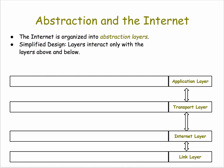An important concept is that layers can only interact with the layers immediately above or below them. So take the transport layer — it interacts with the application layer and the internet layer, but it cannot interact with the link layer. Only the internet layer can interact with the link layer, and above it, the transport layer. This way of organizing things makes managing traffic and data processing much more effective and efficient.